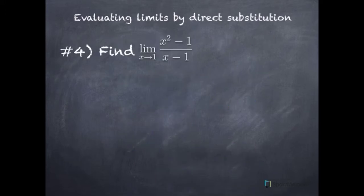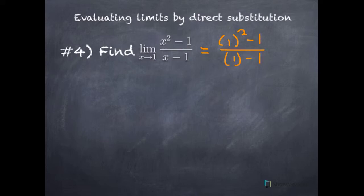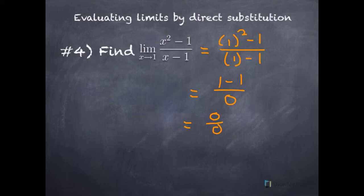Example 4. Find this limit by direct substitution. We're going to replace all the x's with 1's. So we get 1 squared minus 1 over 1 minus 1, which gives us 0 over 0. Now we're in quite the pickle — dividing by 0 is undefined. So we tried to evaluate this limit by substitution and it's undefined; it didn't work.